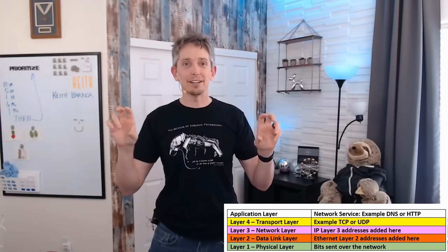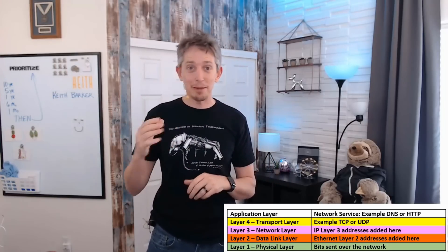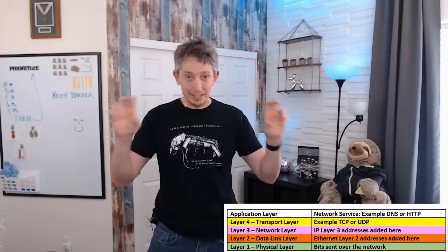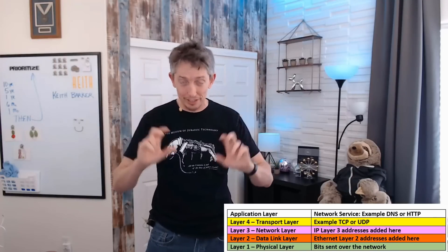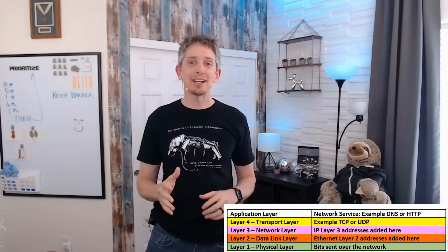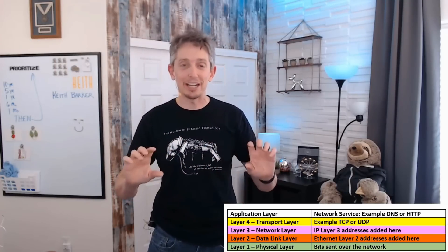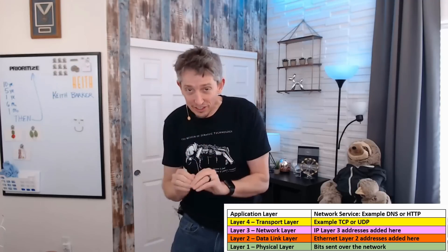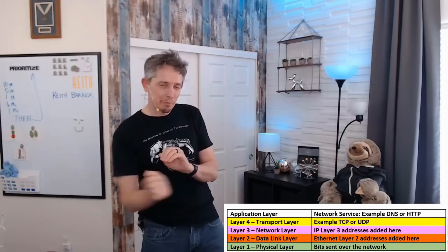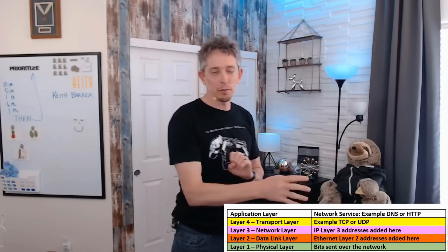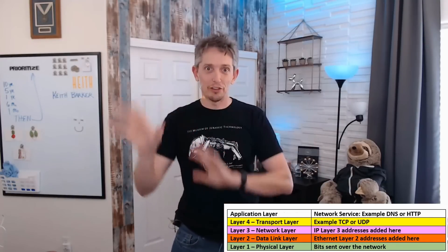And then at the network layer, we have protocols such as IP version 4, with IP addresses that are added. And then as we go down to layer 2 on an Ethernet network, we have layer 2 Ethernet addresses that are added. Then at the physical layer, those messages are spit out bit by bit over the network and hopefully delivered to the final destination.